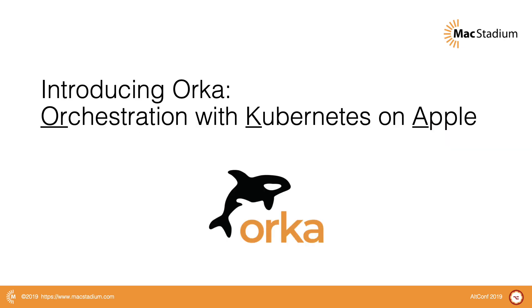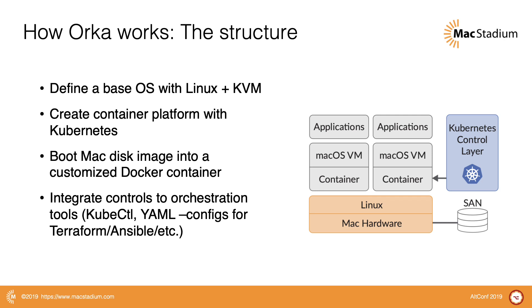We're introducing it today — it's called ORCA, which stands for Orchestration with Kubernetes on Apple. Here's how ORCA works: we take genuine Apple hardware and put a layer of customized Linux and our code on top of that, which includes a Kubernetes layer. That Kubernetes layer helps us drive and manipulate Mac OS, which runs in a Docker container. The good part is we're not modifying Mac OS in any way, shape, or form — so it's not a weird customized version. We're using standard Docker wrapping around it, not custom one-off stuff, so you don't have to learn anything new to drive the Docker layer.